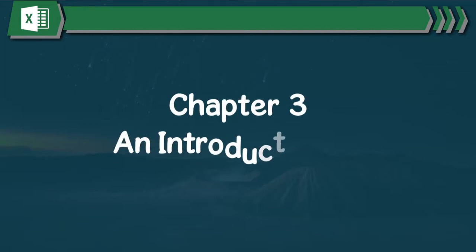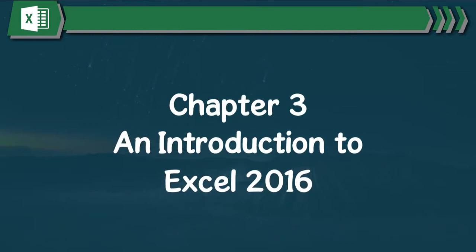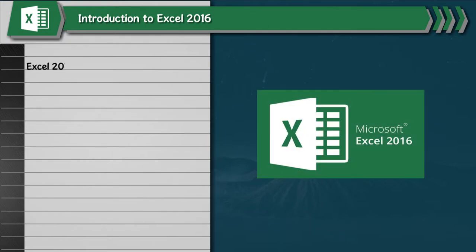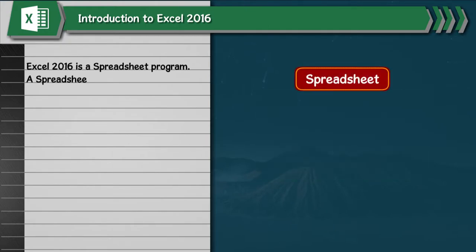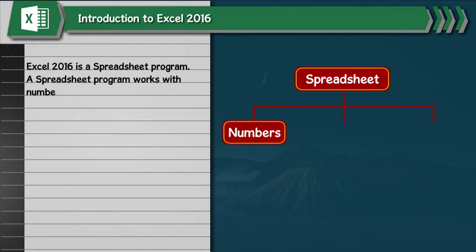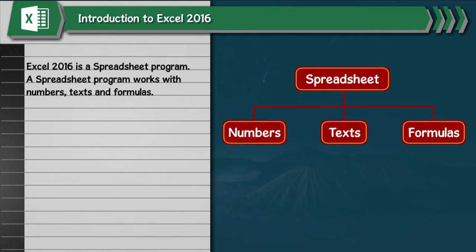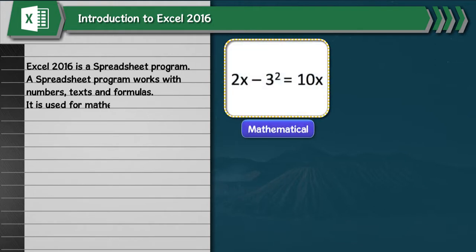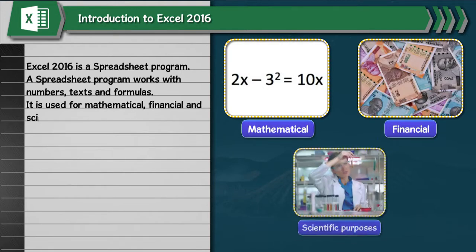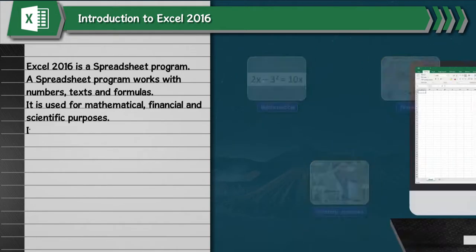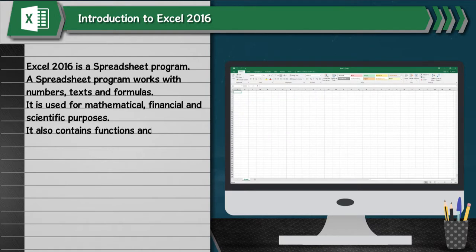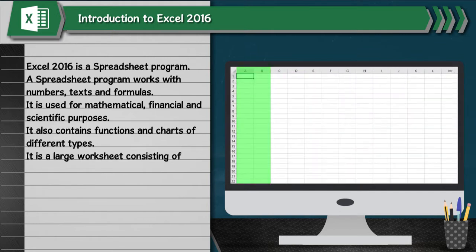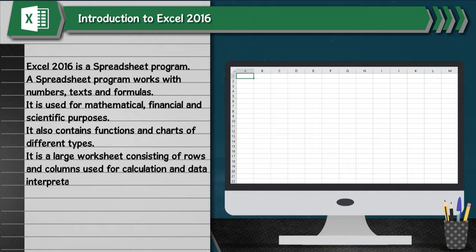Chapter 3: An Introduction to Excel 2016. Excel 2016 is a spreadsheet program that works with numbers, text and formulas. It is used for mathematical, financial and scientific purposes. It also contains functions and charts of different types. It is a large worksheet consisting of rows and columns used for calculation and data interpretation.